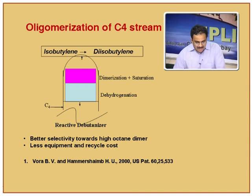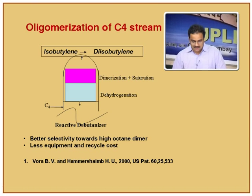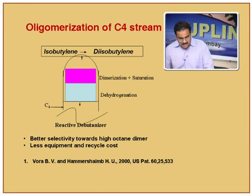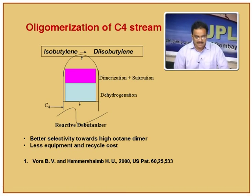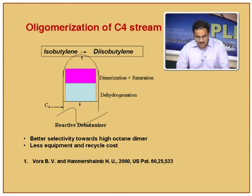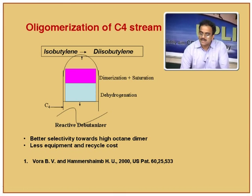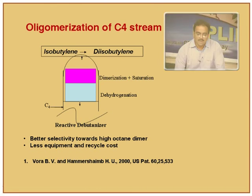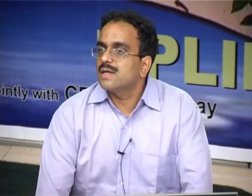They claim less equipment cost, less recycle cost, and better selectivity. The general name for this is a reactive debutanizer — where isobutene is converted to diisobutene, and both isobutene and unreacted components are removed from the C4 stream, hence the name debutanizer.